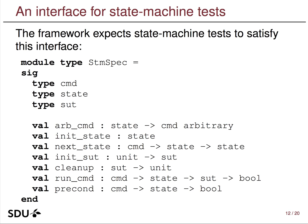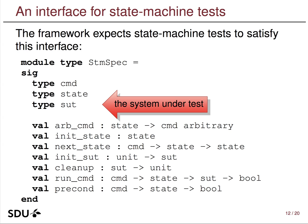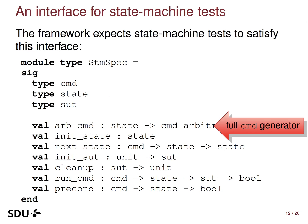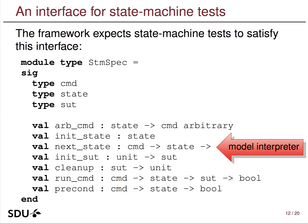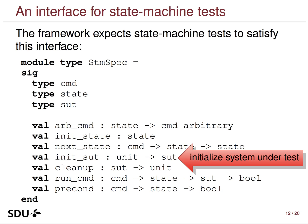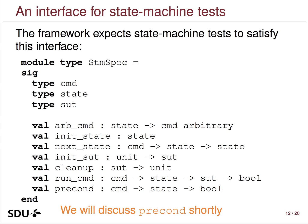Overall, the framework expects a module satisfying a specific interface. There is a command type, a state type expressing the model, and a type for the system under test. It expects a full generator of commands, an init_state to initialize the model, and a one-command interpreter over the model. For the system under test, it expects a hook to initialize and reset it, and a run_command that both interprets a command over the system and checks agreement, returning a boolean. I'll get back to preconditions in a bit.